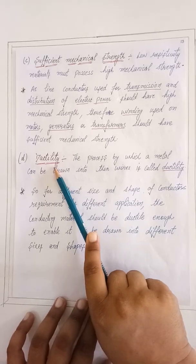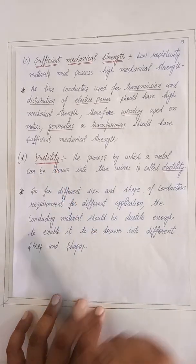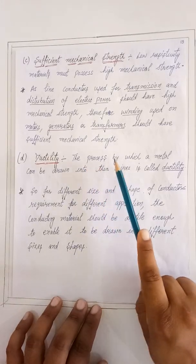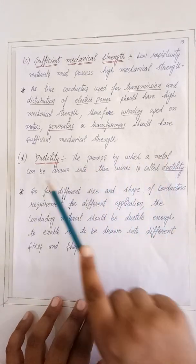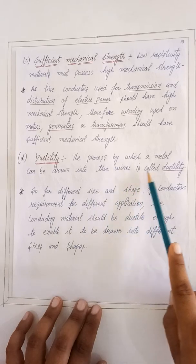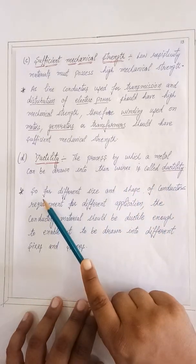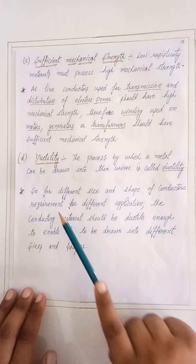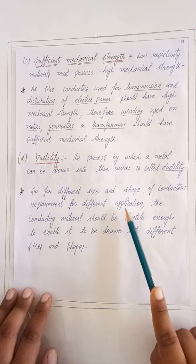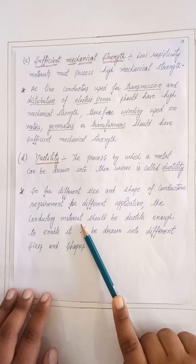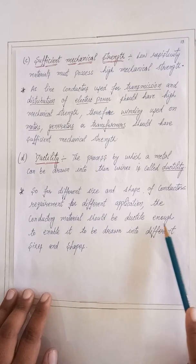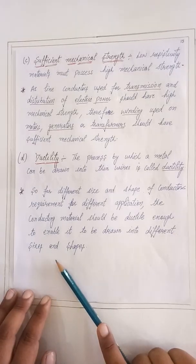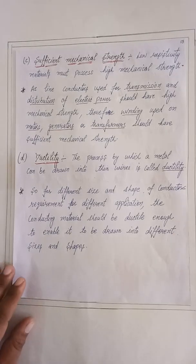The fourth property is ductility. The process by which a metal can be drawn into thin wires is called ductility. For different sizes and shapes of conductors required for different applications, conducting materials should be ductile enough to enable them to be drawn into different sizes and shapes.